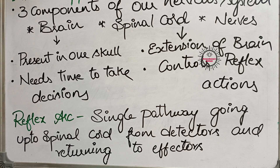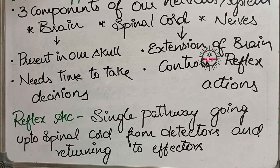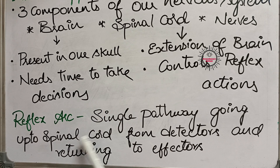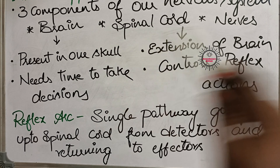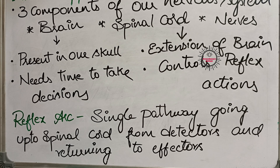The effector organ is the target organ — the organ that responds to the reflex action. For example, when touching a hot object, the hand that withdraws is the effector organ. When a bright light focuses on the eye, the eyelid is the effector organ. The pathway from detector through the spinal cord to the effector organ is called the reflex arc.